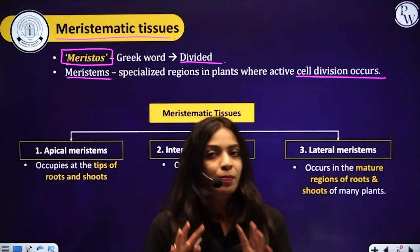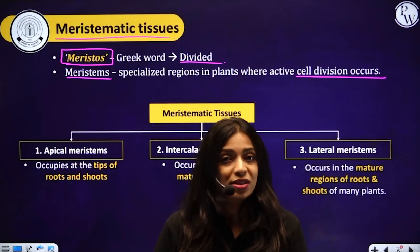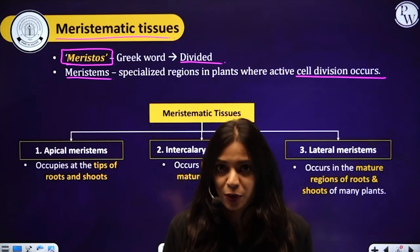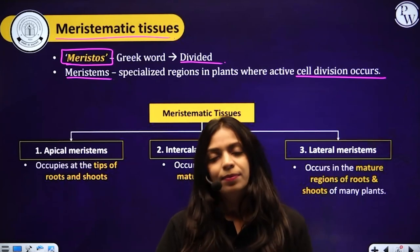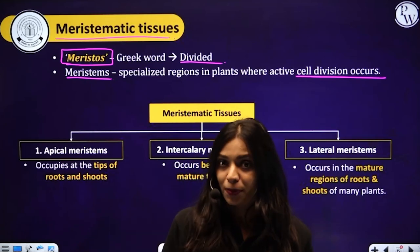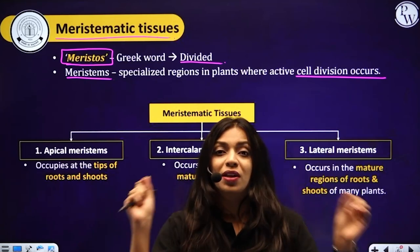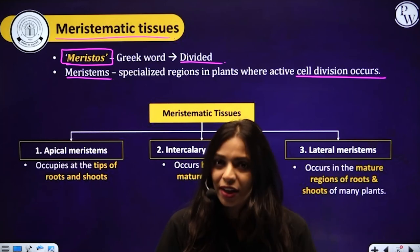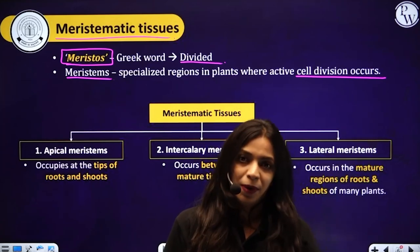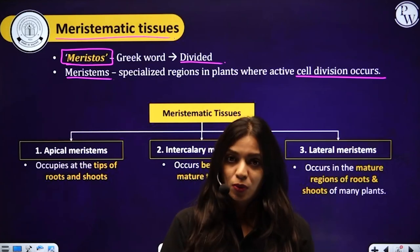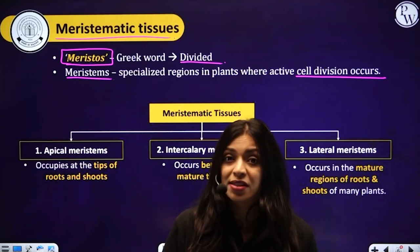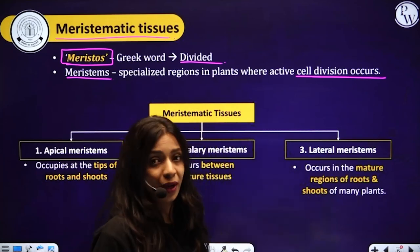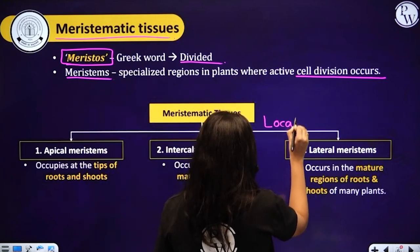Meristematic tissue has cells constantly undergoing cell division, causing increase in the size of the plant. These meristematic tissues are not found throughout the plant — only in specific regions called meristems. We can classify meristematic tissue based on where exactly it is located. This classification of meristematic tissue is based on its location — it will usually be located in the growing regions of the plant.